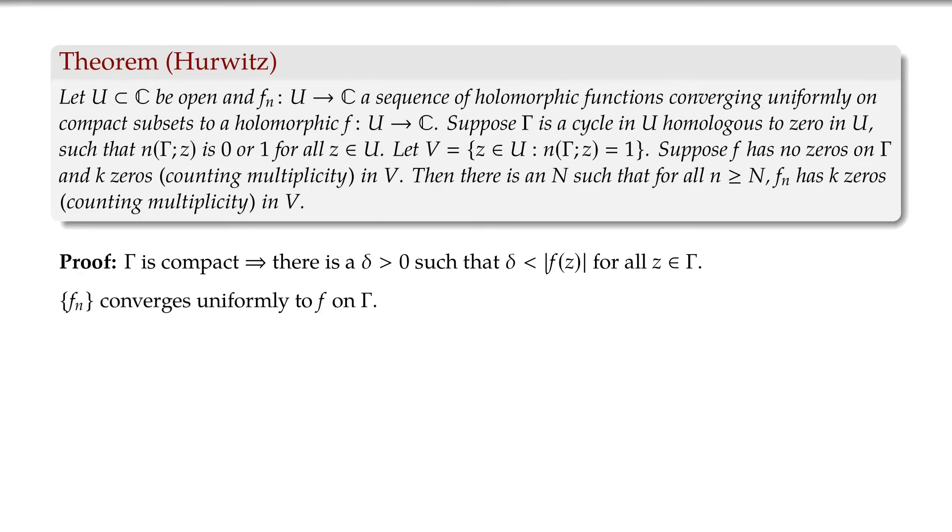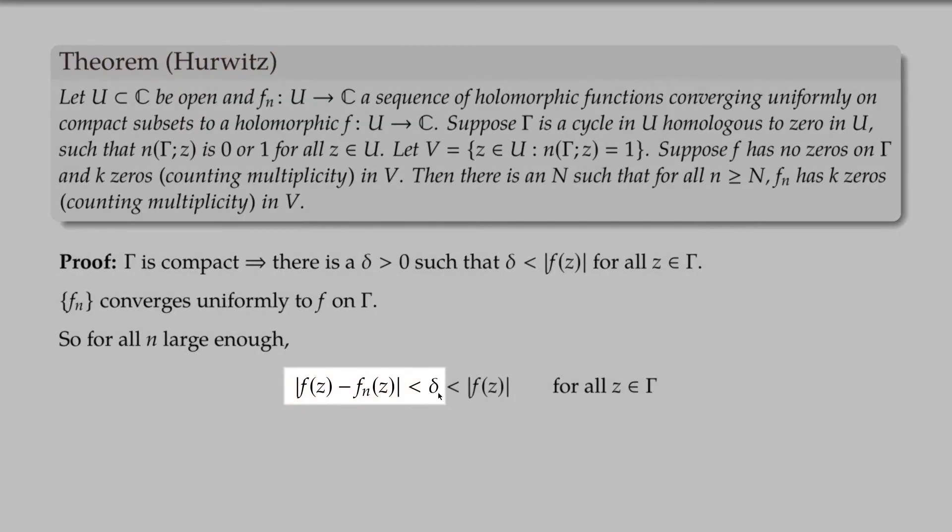Now, the sequence F_N converges uniformly to F on gamma because it's compact. All right, so therefore, we can choose an N large enough. Choose a capital N, so for all N bigger than capital N, |F - F_N| is going to be less than delta for all z in gamma.